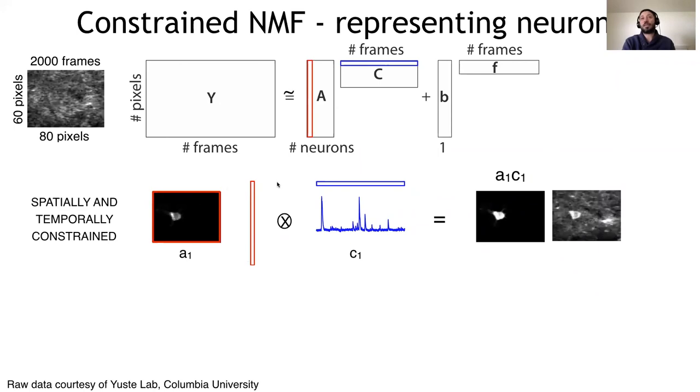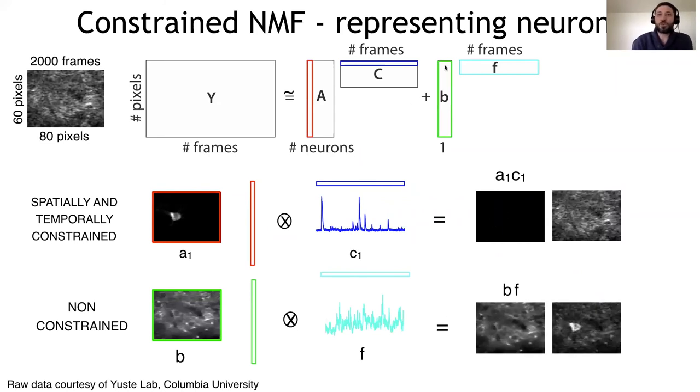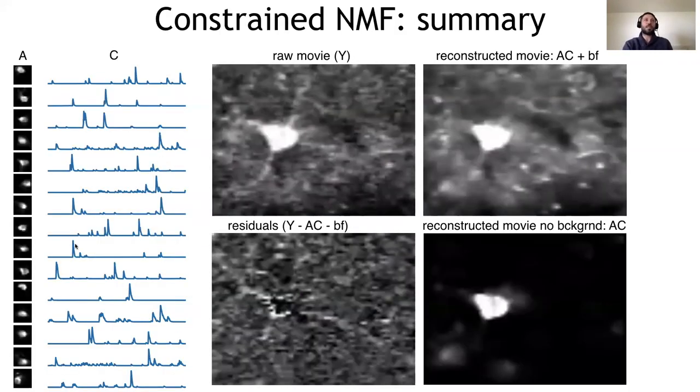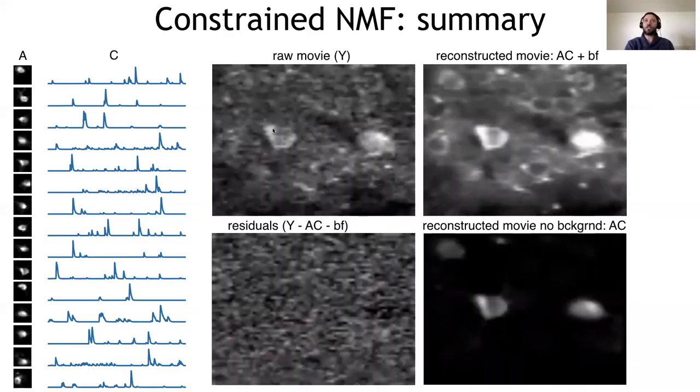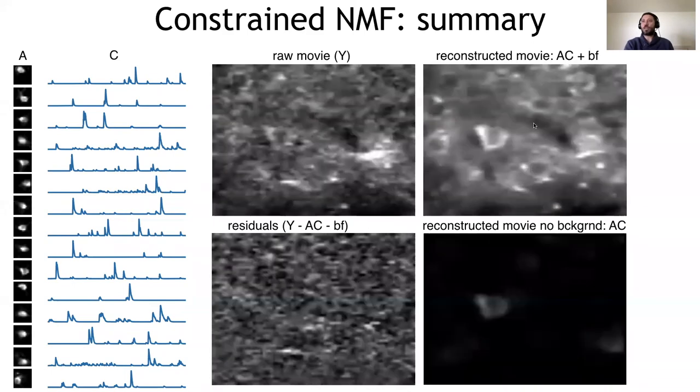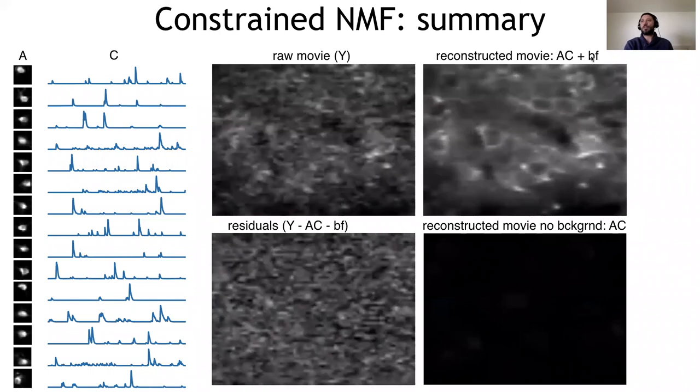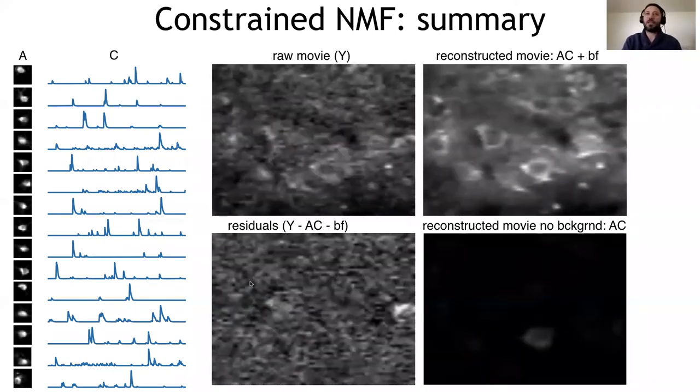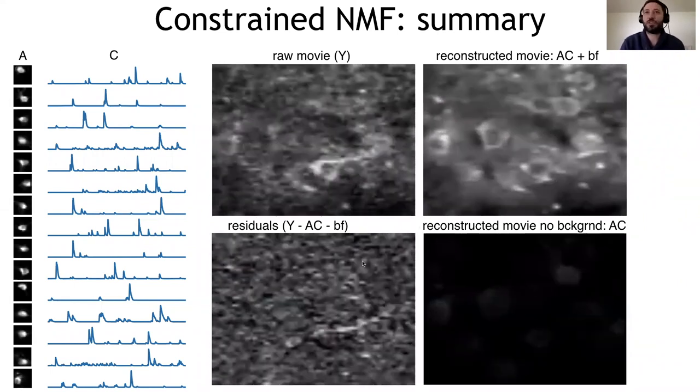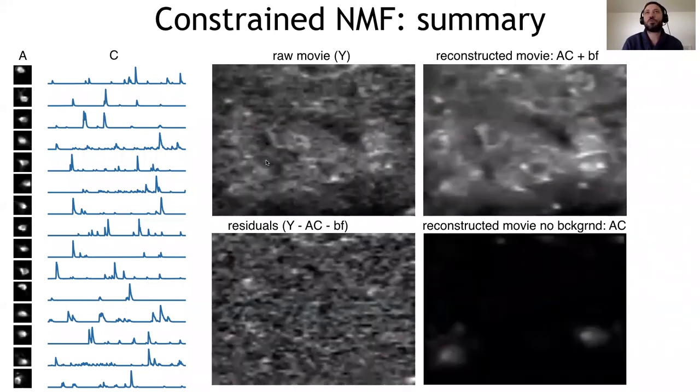This is very useful because this type of representation automatically enforces that there is a separation of the signals coming from overlapping neurons and the background. For the background, we have something similar. Also, if you look at the outer product of matrix B and F will reconstruct what is your background. And this is exactly what happens when you put everything together. On the left, the output of the algorithm, the spatial components, the temporal components that we call A and C. This is the raw movie, the original movie. This is the movie that is reconstructed using both the neurons and the background. And here we have the movie that is constructed just using the neurons. And finally, here we have the residual.